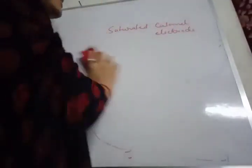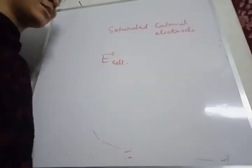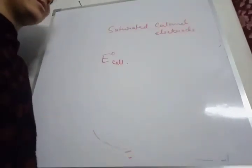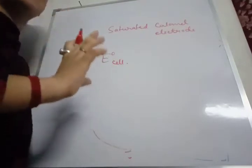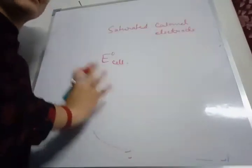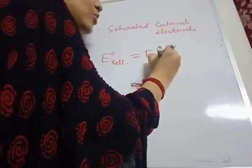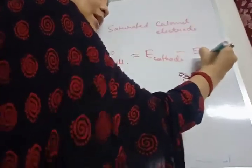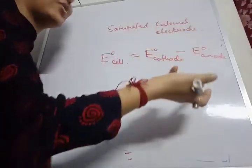Now we have the standard EMF of a cell, or E⁰ cell. Standard EMF means all the components for a given cell reaction must be in their standard states: ions at one molar concentration, gases at one bar pressure, and temperature at 298 Kelvin. E⁰ cell is calculated the same way as E cell: E⁰ cathode minus E⁰ anode, or E⁰ right electrode minus E⁰ left electrode.